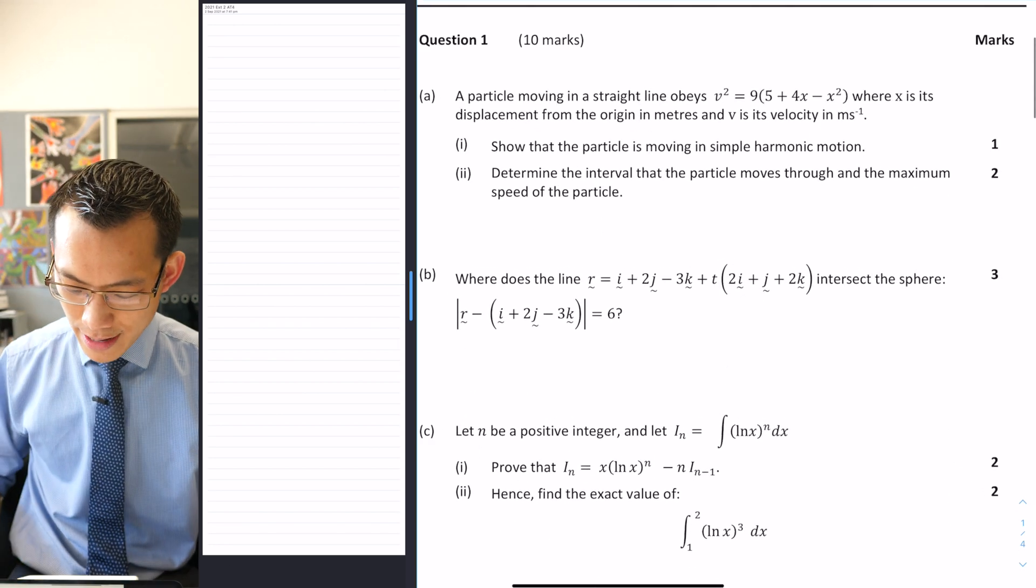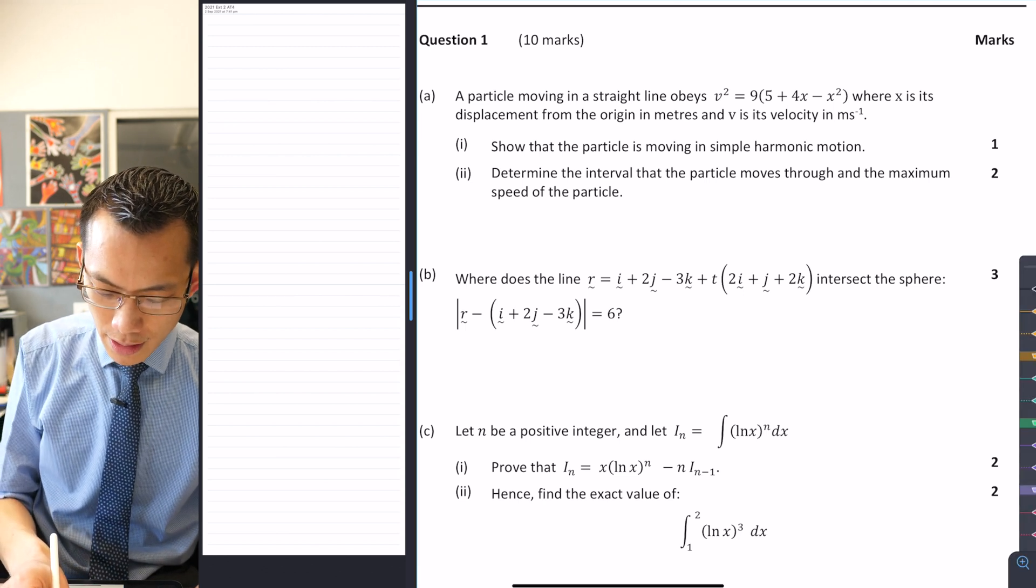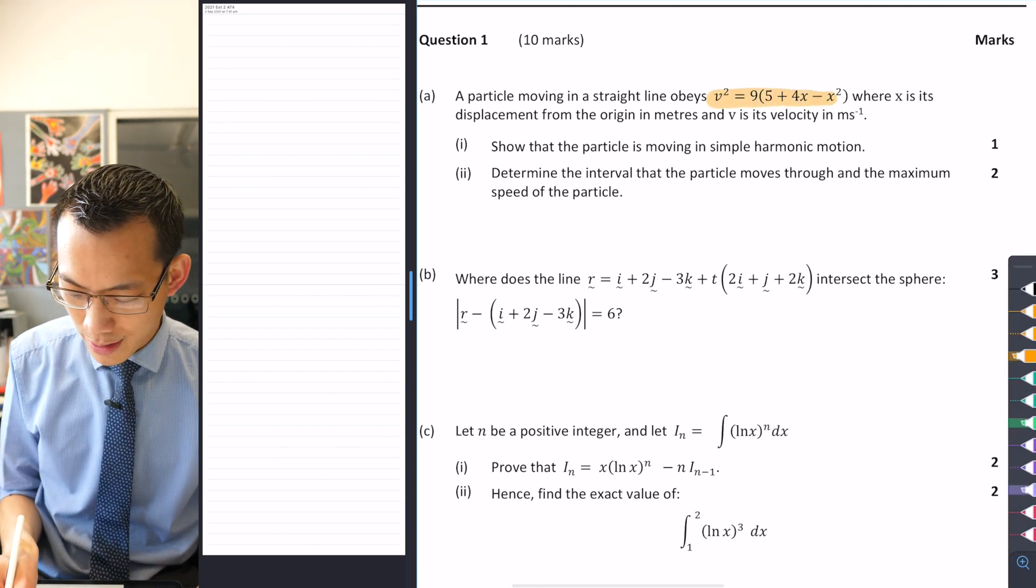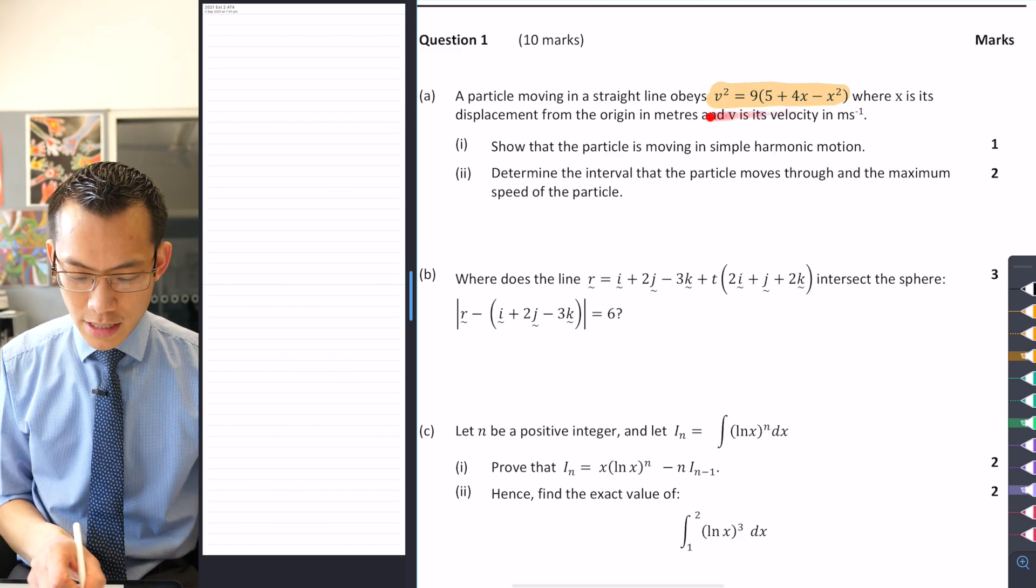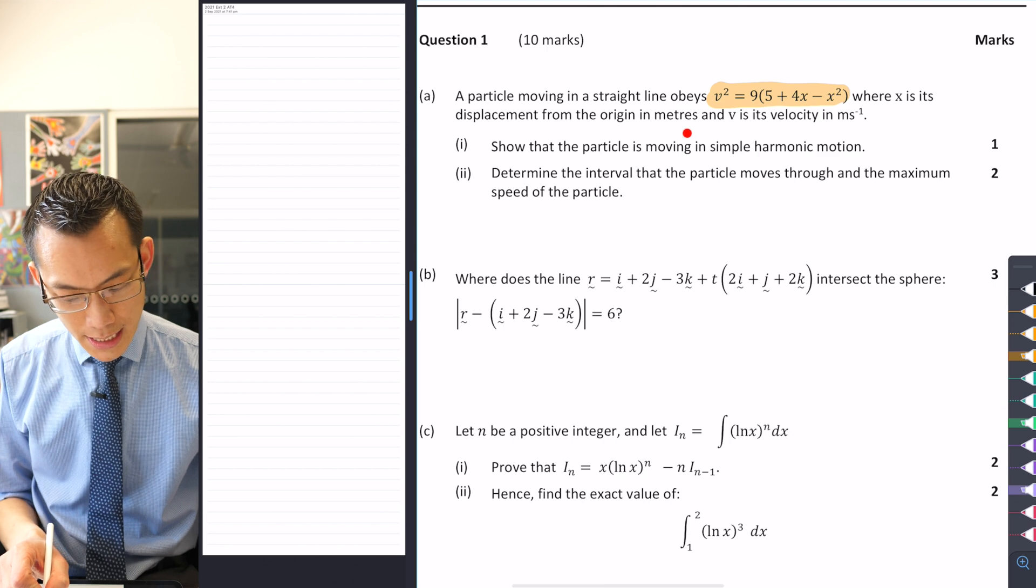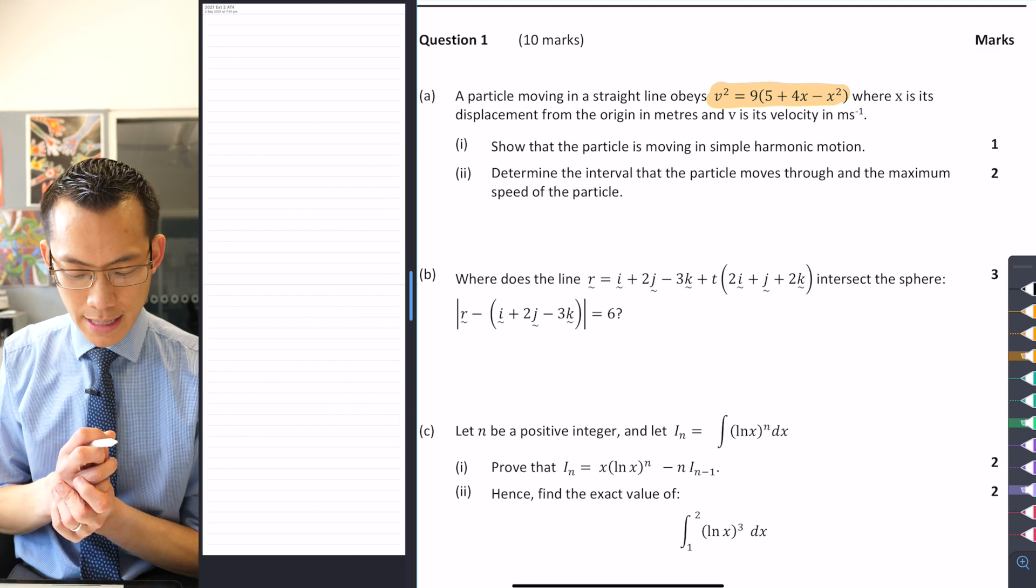A particle moving in a straight line obeys this particular equation that is provided here, which I'm going to highlight because obviously we're going to need to use this in a second, where x is its displacement from the origin in meters and v is its velocity in meters per second. Okay, so we've got some units there, that's handy.